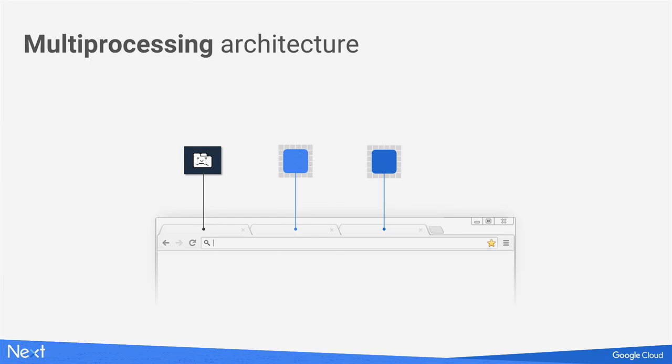Chrome is stable because it was built using a multiprocessing architecture, which allocates each task and every tab as a separate process. While we constantly update Chrome with new improvements, we can quickly solve any problems that might cause the browser to crash. You may have seen a tab crash if you've been using Chrome for a long time, but the entire instance won't. Processes are isolated and cannot talk across tabs with each other.